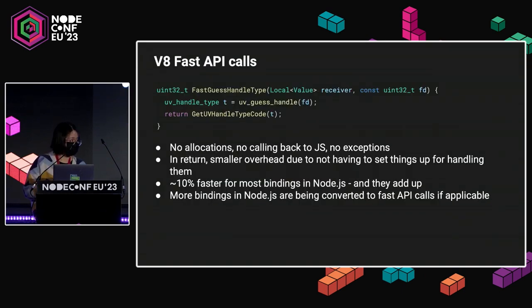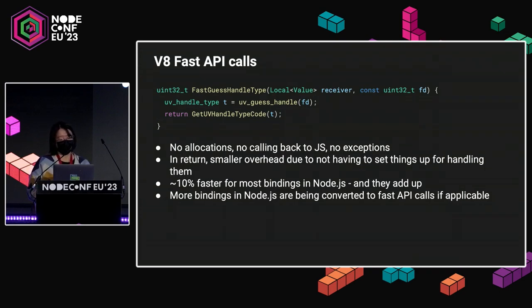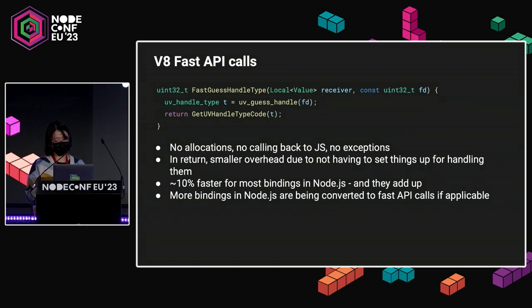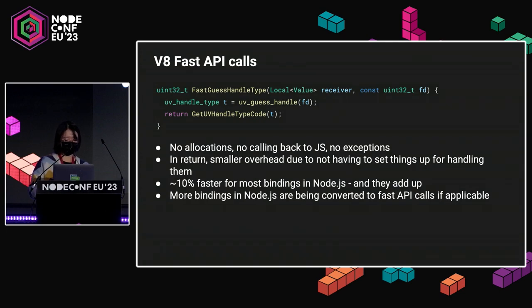Now, there are some rules about the fast API implementation. We cannot allocate JavaScript objects here. We cannot call back to JavaScript, and we cannot throw exceptions — so many restrictions. In return, the overhead of calling from JavaScript to C++ is smaller because V8 no longer needs to set things up for those. It's about 10% faster for most bindings in Node. In some features, the call from JavaScript to C++ can be quite frequent, so they add up. We're now adding support for fast API calls in more bindings internally in Node, as long as they can work with the limitations mentioned before.